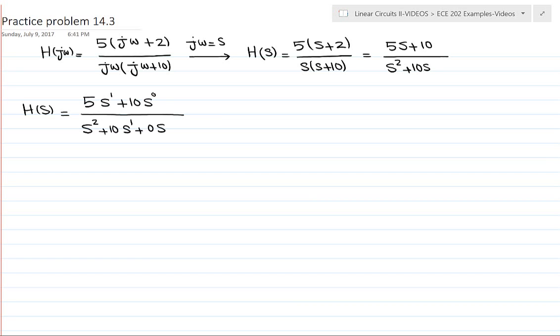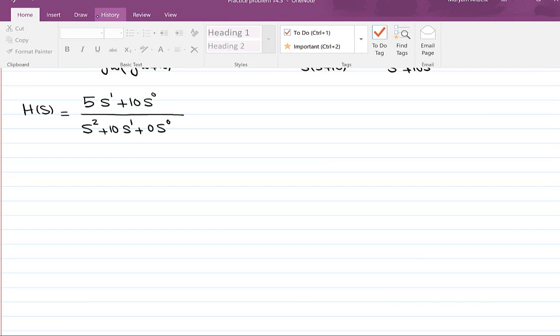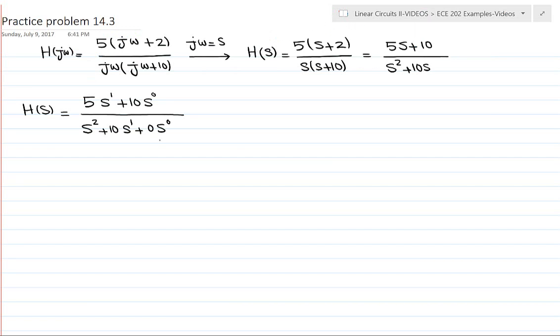plus 0s to the power of 0. You don't want to forget about this part here, because in the original transfer function we don't have that, but if we don't enter that in MATLAB then MATLAB cannot understand that the denominator is s to the power of 2.